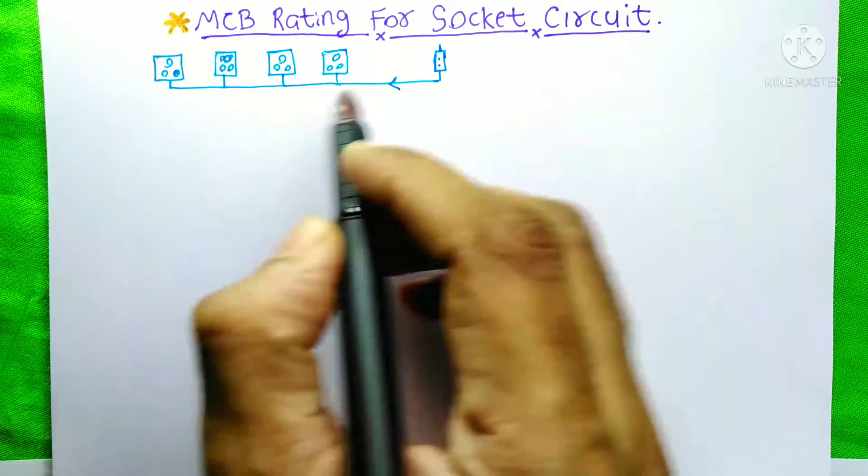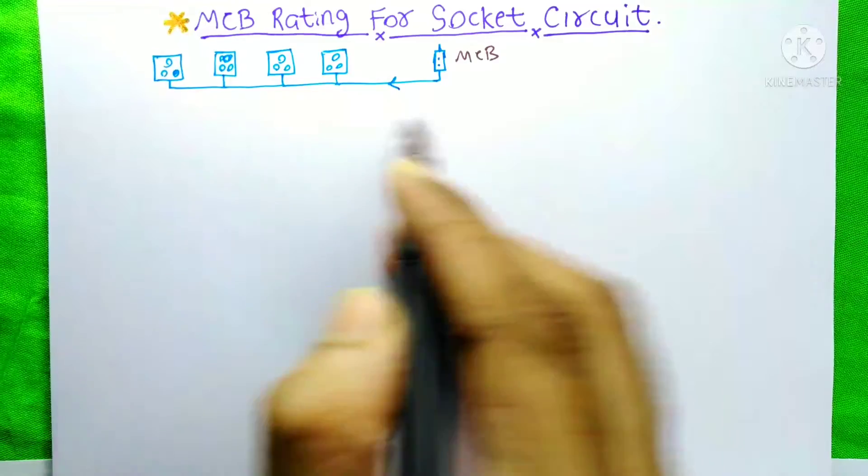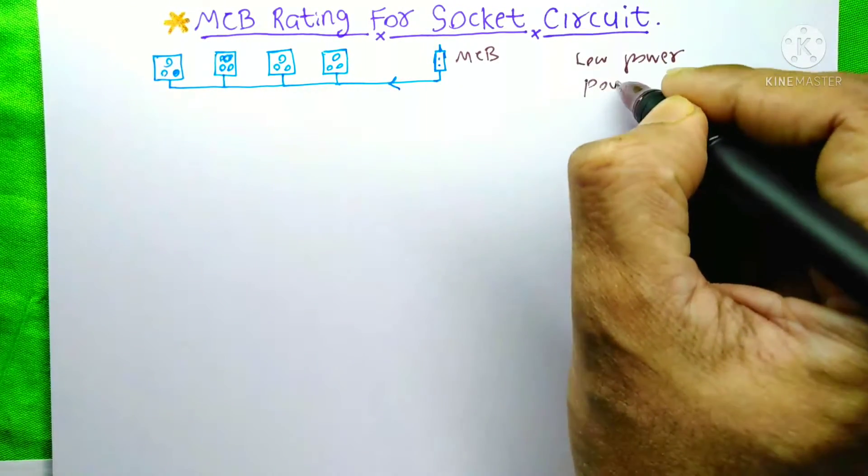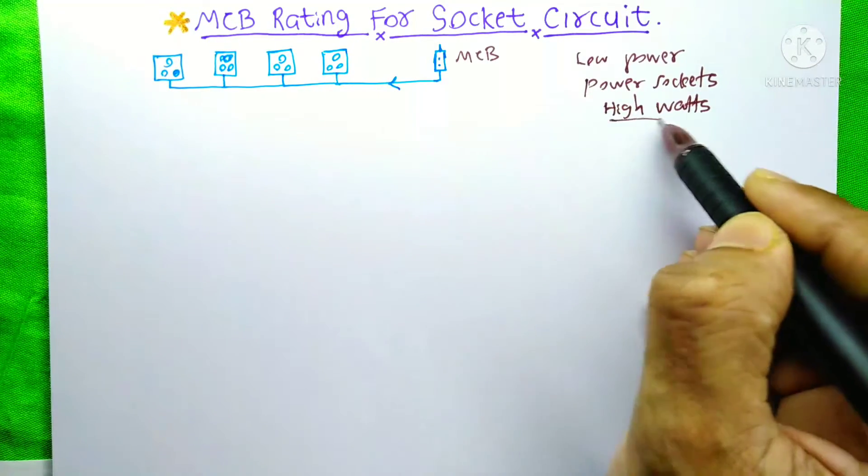So it is a sample of our sockets and it is the MCB on our DB. These sockets are low power sockets. It is not the power sockets. You know the power sockets are used to connect high wattage equipment.